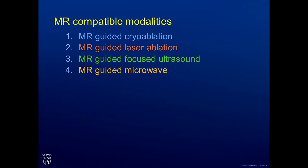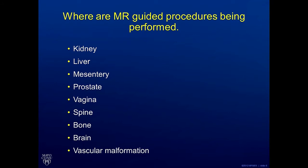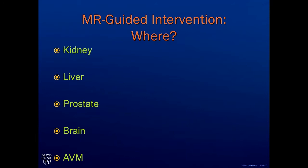Where do we use these modalities to treat tumors in the body? We treat all over the body, but more specifically we treat lesions in the kidney, liver, mesentery, prostate, vaginal recurrences, spine, bone, brain, and vascular malformations throughout the body. Some of the main areas that we target are kidney, liver, prostate, brain, and vascular malformations.